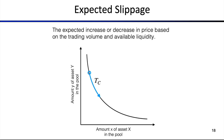The price is actually changing as you move along this bonding curve. The initial price at one point is different from the price further along the curve. The price only gets worse the larger your trade is. This is a continuous spectrum — every coin of Y you receive has a slightly different price in terms of X as you move along the curve.